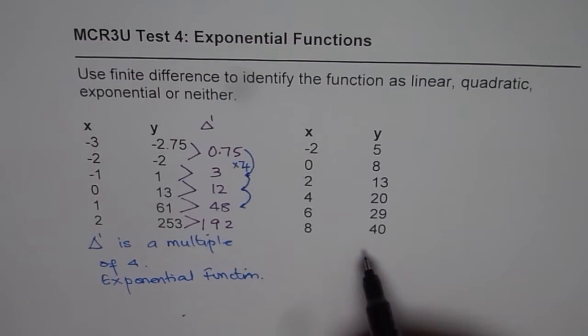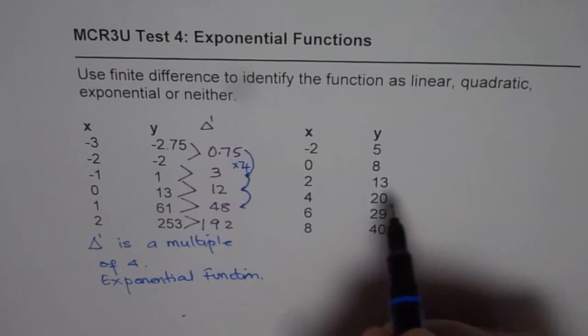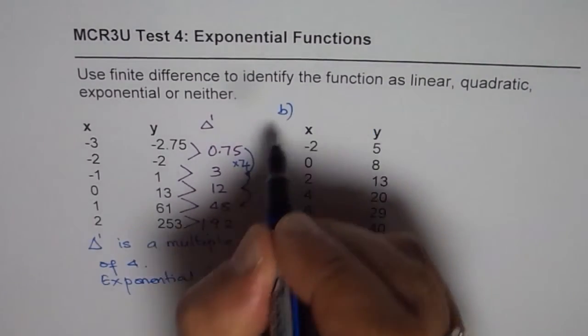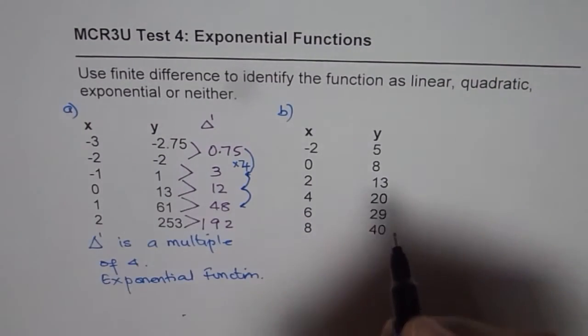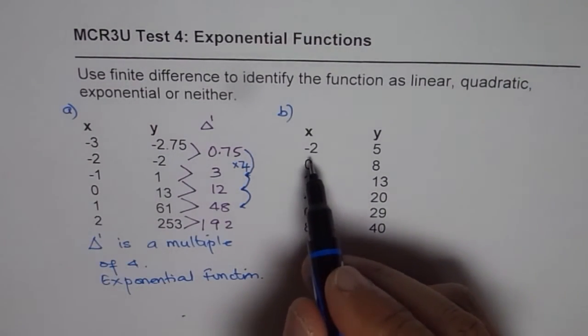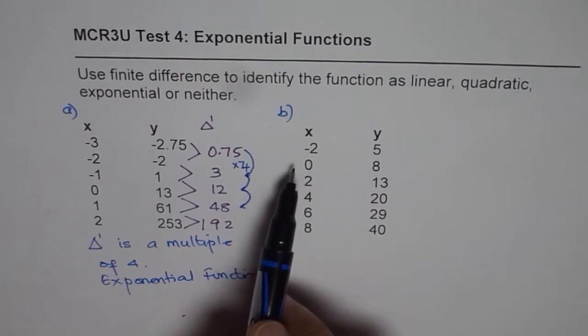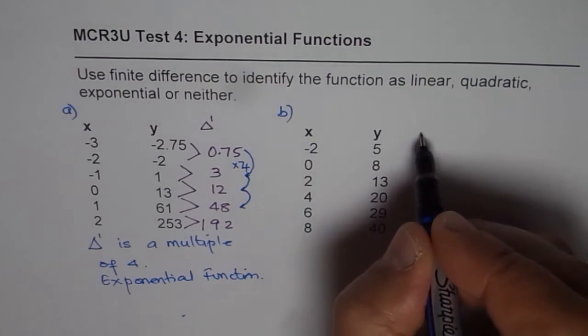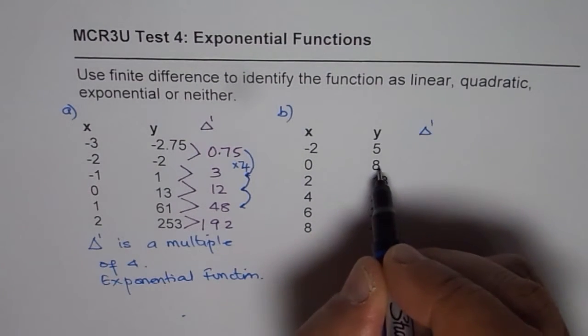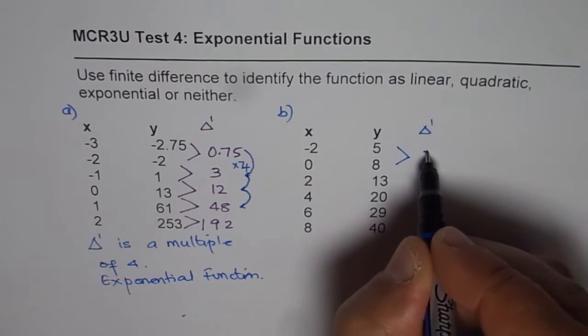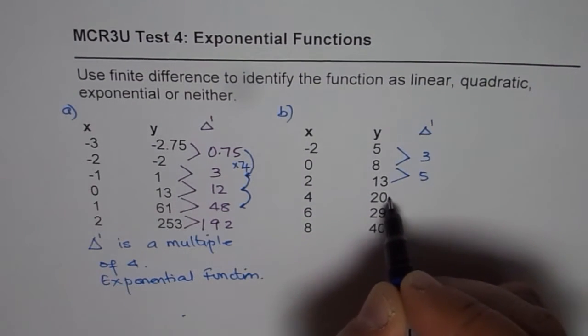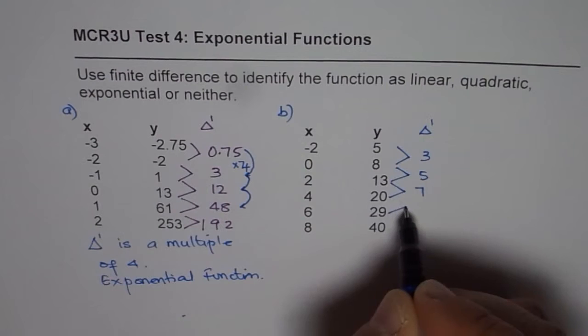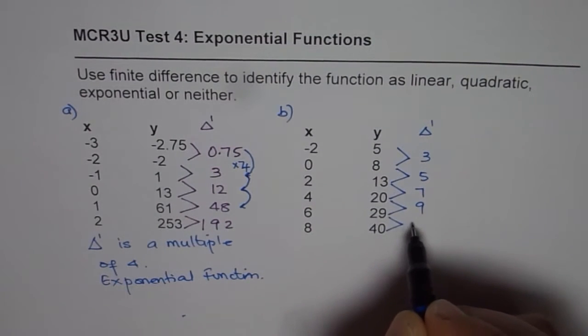Now you can calculate the first and second finite difference of the second set of data given to you. So here we are given x values in order, but they are going up by 2 each time. But still there is a trend. So we can do y2 minus y1. So if I find the first difference, I get 8 minus 5, which is 3. 13 minus 8, which is 5. Then 7, 9, 11.